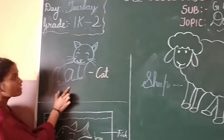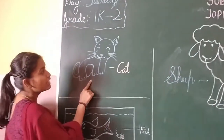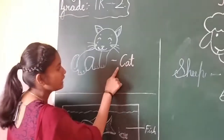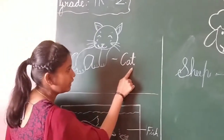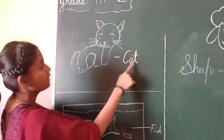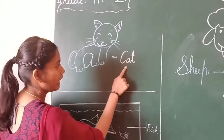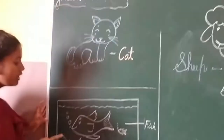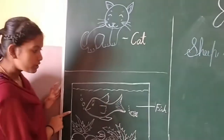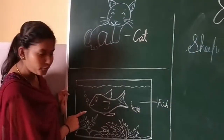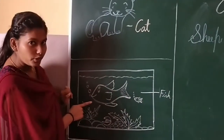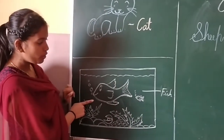So then, what is this? This is a cat. C-A-T, cat. So then, do you know what is this? It's a fish. Some of you have a fish in your home.